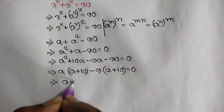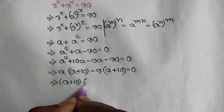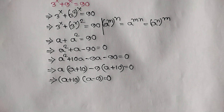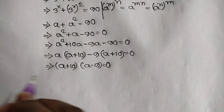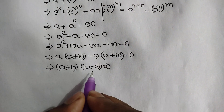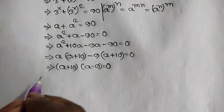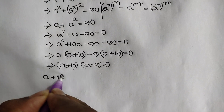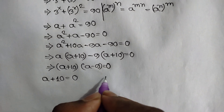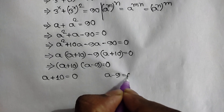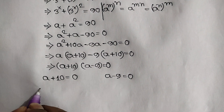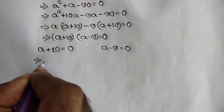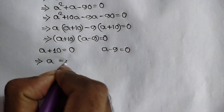Taking (a plus 10) common, we get (a plus 10)(a minus 9) is equal to 0. So a plus 10 equals 0, giving a equals negative 10, or a minus 9 equals 0, giving a equals 9.